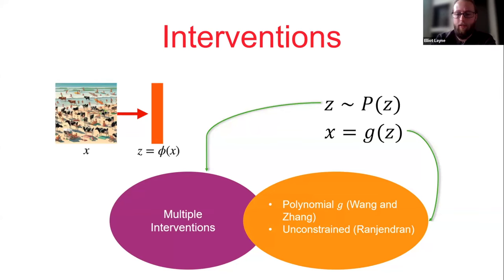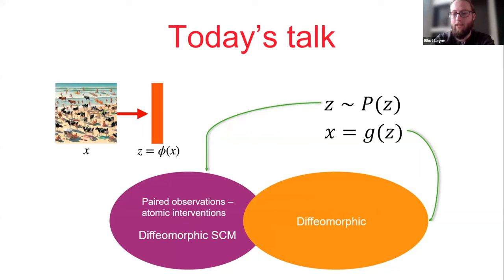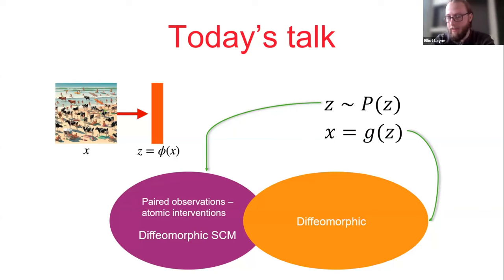Today we're returning to the realm of interventions, done slightly differently with a sparsity aspect. We assume we have paired observations that are atomic — meaning exactly one element of z has been perturbed between pairs. In exchange for this pairing, compared to Guten's work we drop the linear SCM assumption and instead have a diffeomorphic SCM, and compared to Njiaki Zhang's we no longer need a polynomial g — it's a diffeomorphic g, though in experimentation they relax this assumption as well.